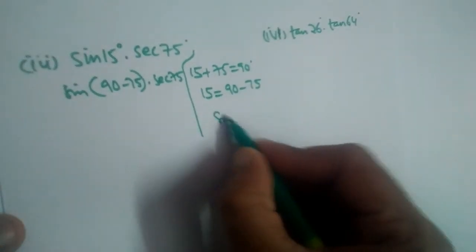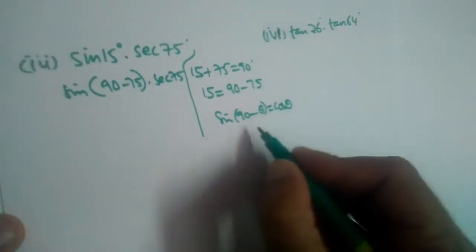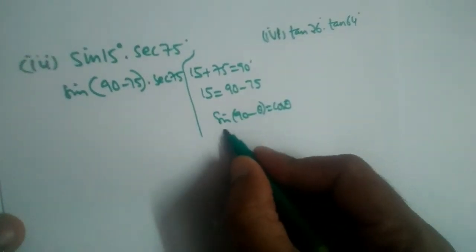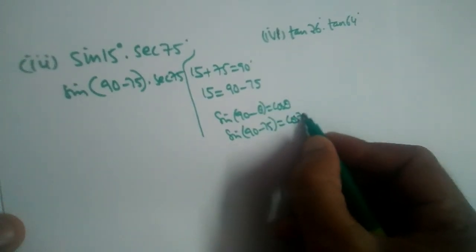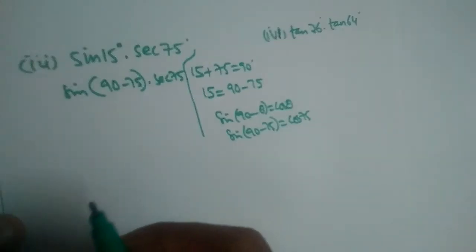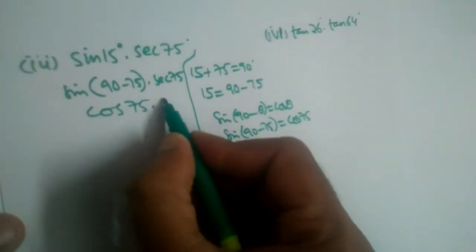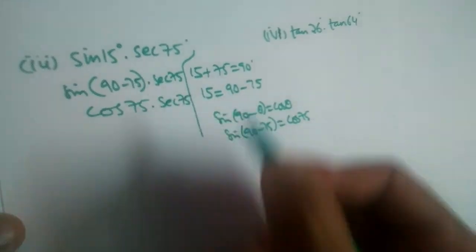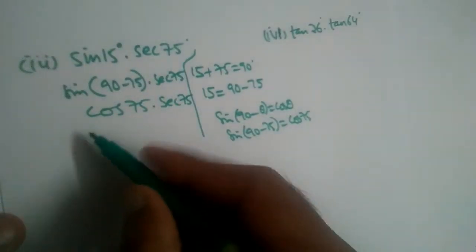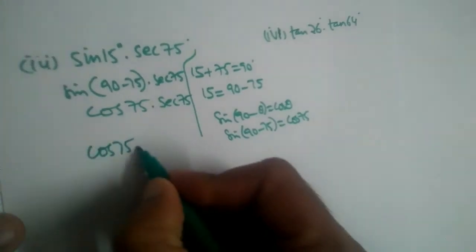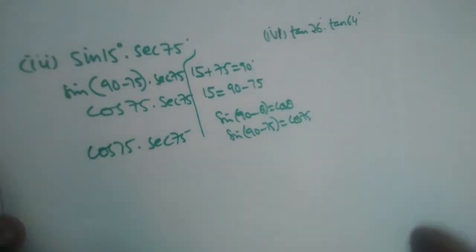We have learned the formula: sin(90° - θ) = cos(θ). So sin(90° - 75°) will become cos(75°). Therefore, we now have cos(75°) multiplied by sec(75°).